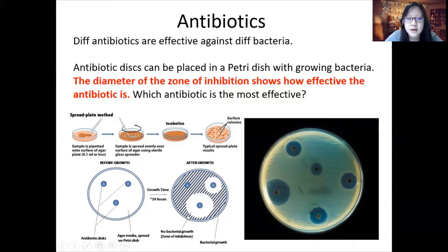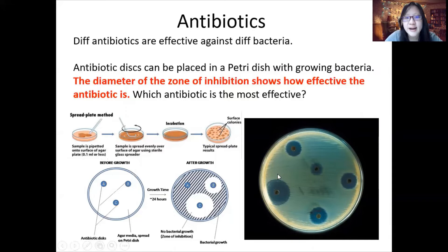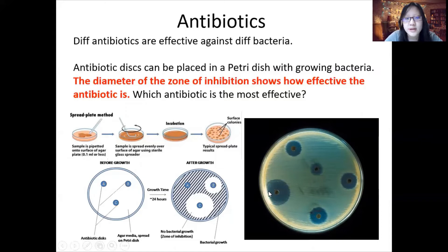Looking at a real-life example, we can see that a particular antibiotic disc has the biggest zone of inhibition and the largest diameter. We measure the diameter in millimeters — never in centimeters. According to CIE standards, we repeat this at least five times, and we can determine which antibiotic is the most effective.